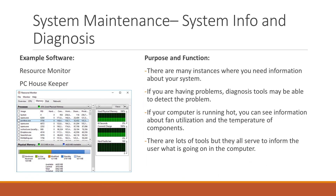We are now on to our final category of utility software, which deals with system maintenance. Our first utility is system information and diagnosis. There are many instances where you need information about your system. Diagnostic tools may be able to detect problems and even solve them. If your computer is running hot, for example, you can see information about fan utilisation and the temperature each component is reaching. There are lots of tools, but each serves to inform the user of what's going on with their computer system.